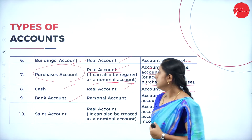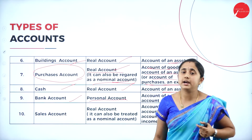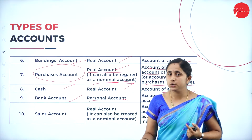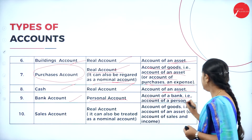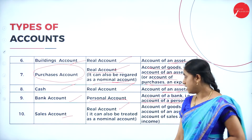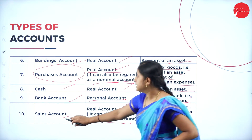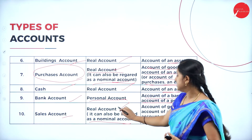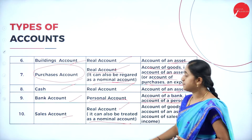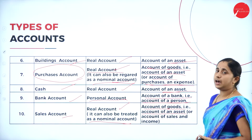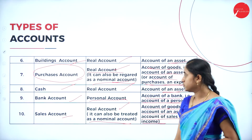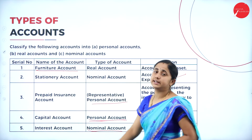Next, bank account. Bank account is also a personal account — bank is a financial institution, so it comes under personal account. Account of a bank is account of a person. Then sales account — you can consider it as a real account or a nominal account, similar to purchase. If you consider the goods, it is a real account. If you consider the sales process, it is an income for the organization, so it comes under nominal account. Account of goods means real account; account of sale as income means nominal account.